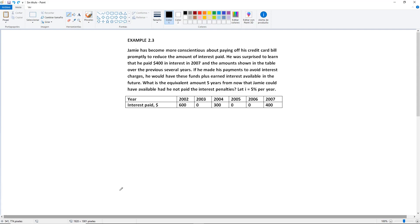He was surprised to learn that he paid $400 in interest in 2007 and the amounts shown in the table, which is this one in 2002 and this one in 2004, over the previous several years. If he made his payments to avoid interest charges,